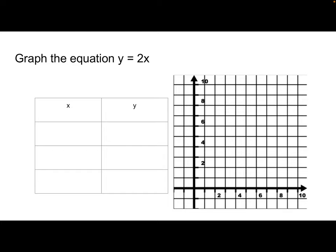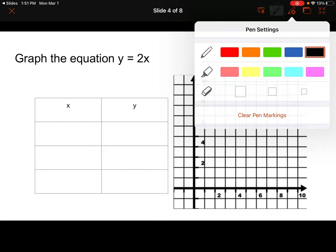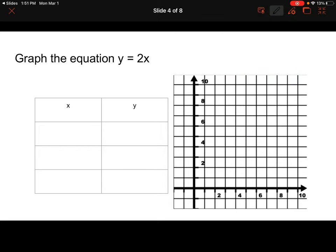Now we want to graph the equation y = 2x. We have our table on the left, so let's start by filling it out. When x = 0, y is also equal to 0. So I'll put one dot right on (0, 0) on my graph. Next, when x = 4, y = 2 times 4, which is 8. So I'll come over to the xy plane, find where x = 4 and y = 8, and graph that point right where those two lines touch.